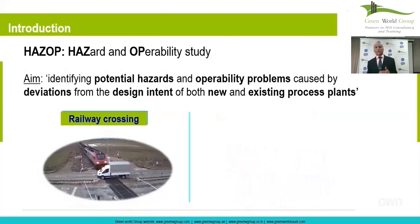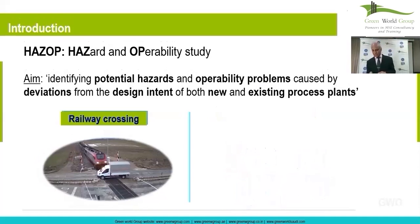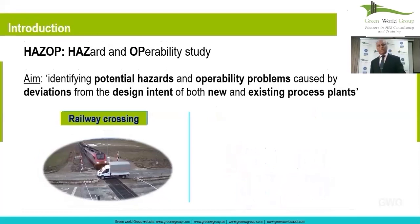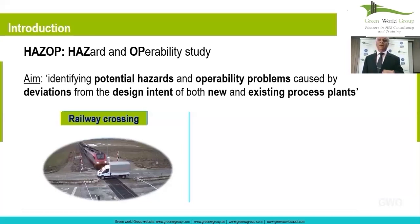Another example is a railway crossing — it's a process. There is a barrier, there are signals, different indicators. A process is defined as a set of interacting, interrelated activities which converts input into output and desired output. You may not get the desired output unless you have everything in place. You may not achieve the design intent. And HAZOP helps you to achieve your design intent.